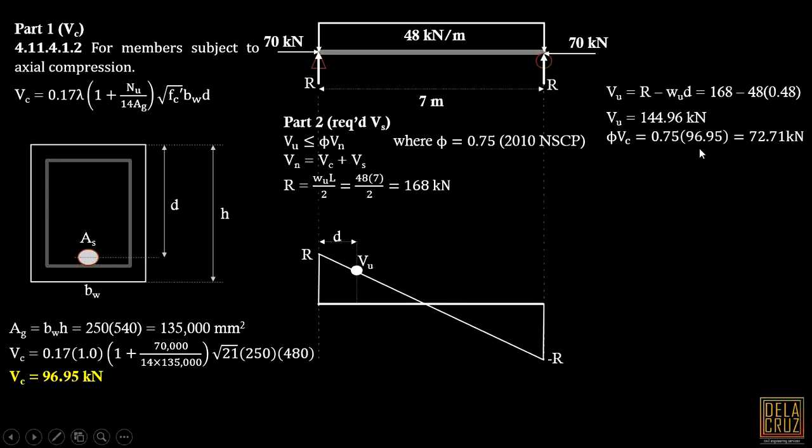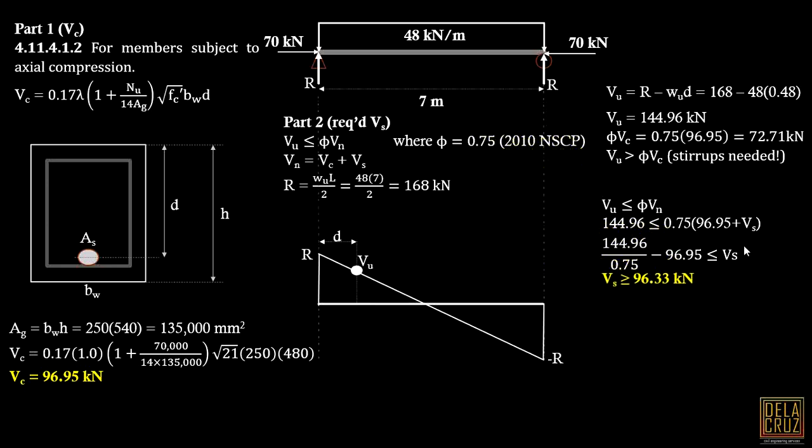Phi Vc equals 72.71 kilonewtons. Now Vu is 144.96, so that is greater than phi Vc. So stirrups are needed or necessary. Now following this equation and substituting all the values, we get Vs. Rearranging that, Vs is greater than or equal to 96.33 kilonewtons.